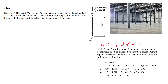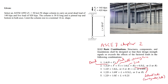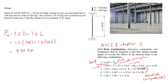From ASCE 7 Chapter 2 we can see the basic load combinations, where D is the dead load, F is the flood load, T is the self-straining force, L is the live load, and H is the lateral load caused by earth pressure, water pressure, or bulky material leaning on the structure. Because we only have dead and live loads, the second load case generates the highest ultimate load, giving us the expression for the ultimate load.